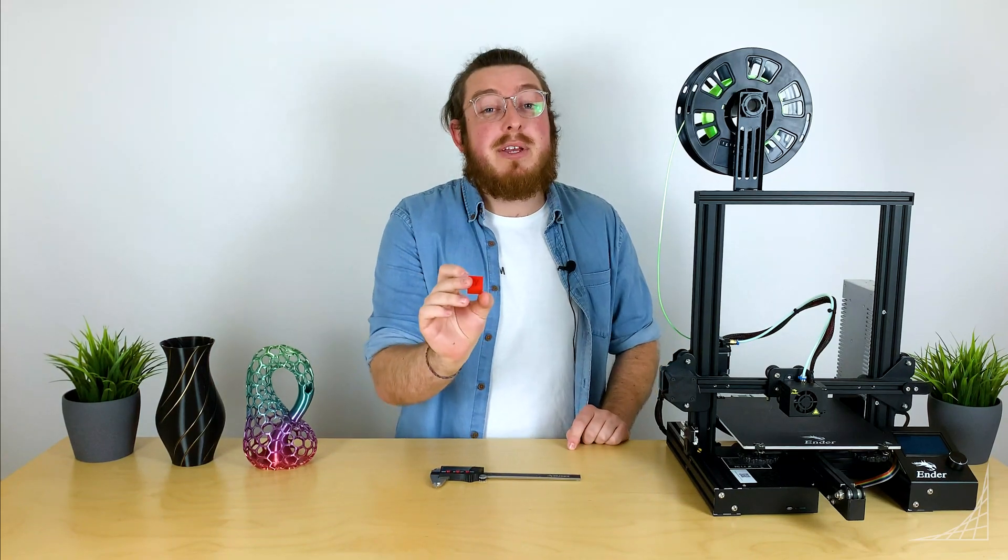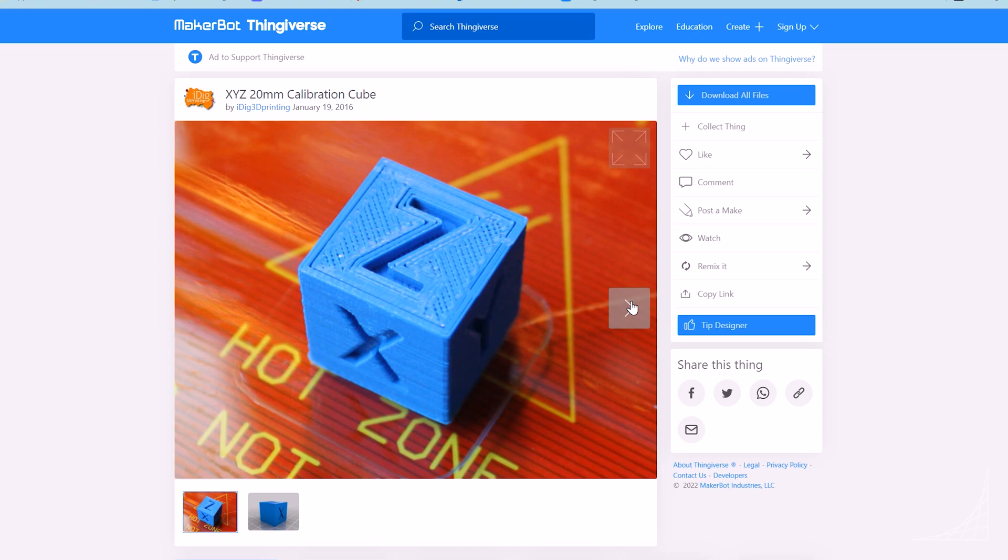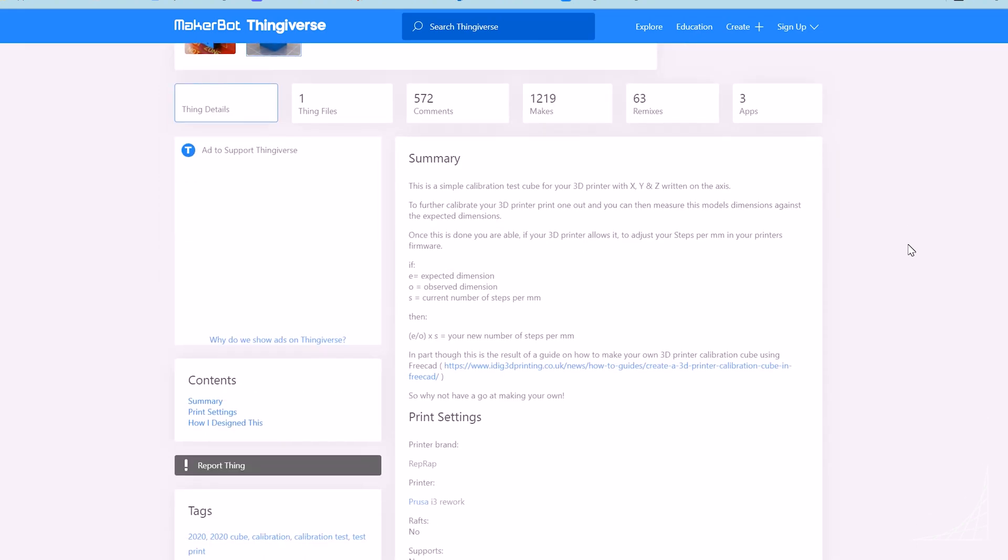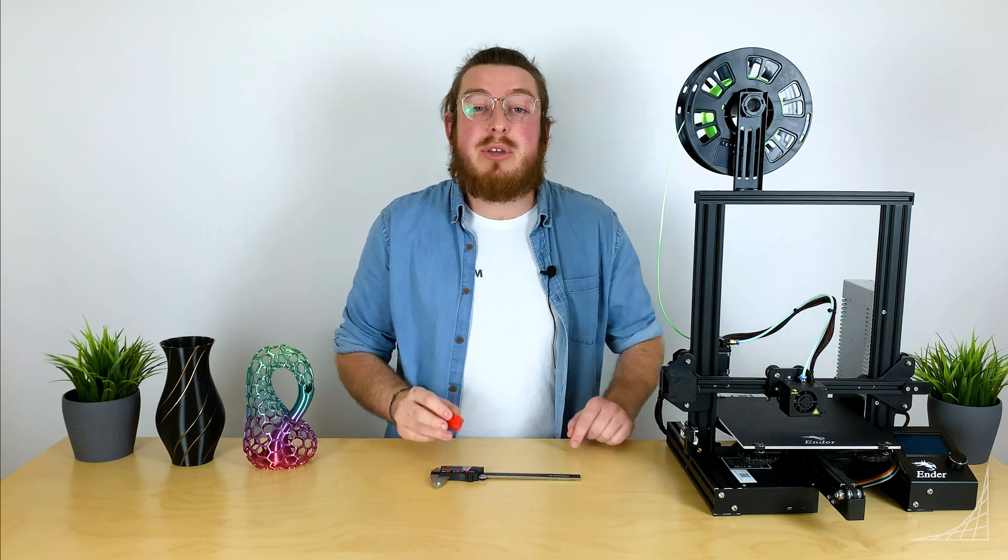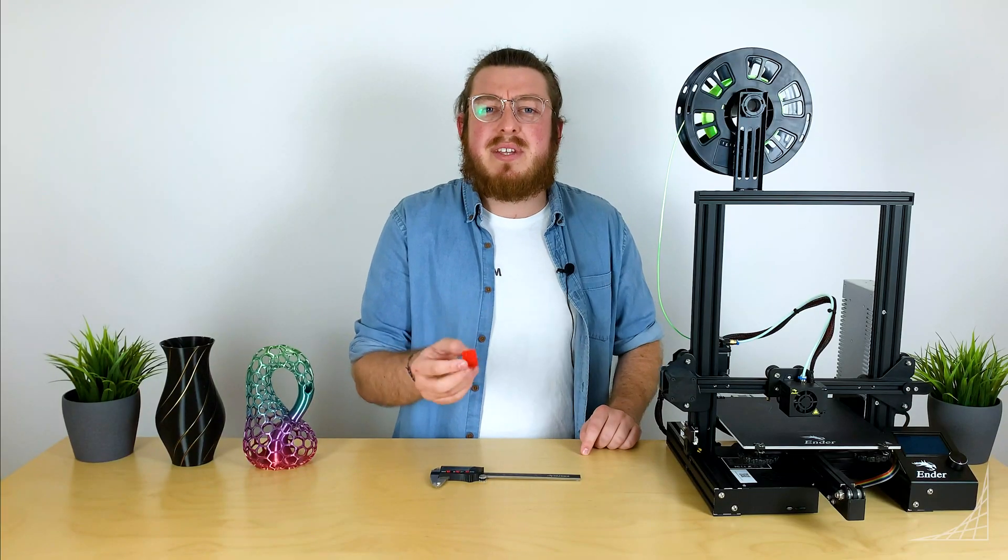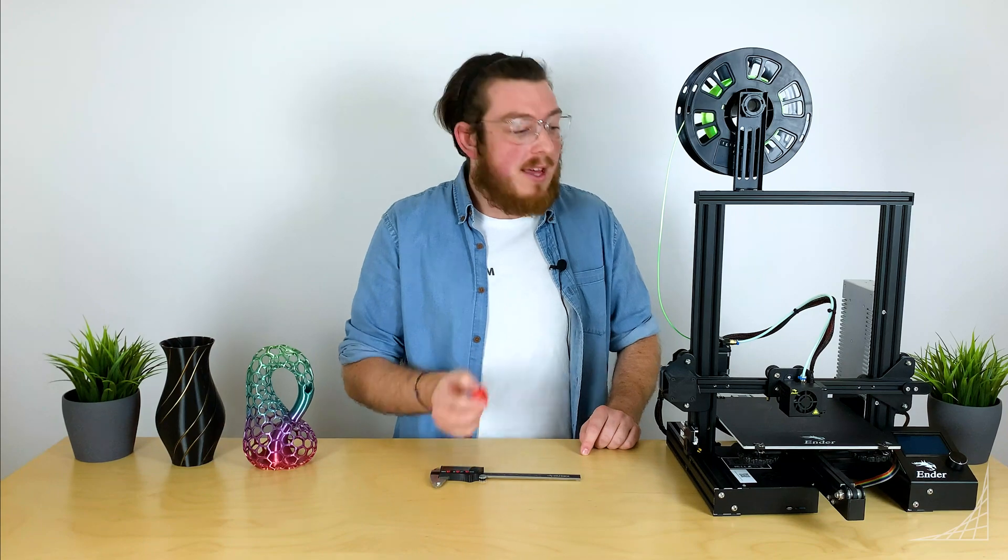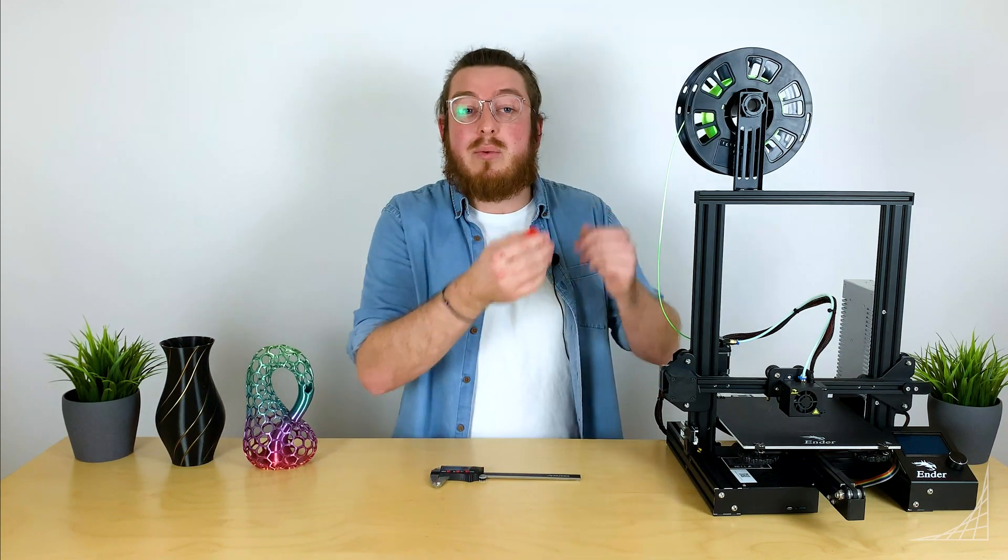To find this file, you can simply go to Thingiverse and download the 20 millimeter calibration cube and pull it into Cura. You can slice it with very normal settings: four walls, eight percent, nothing too crazy, and then send it onto your printer and we'll get that printing.